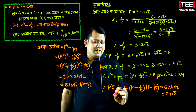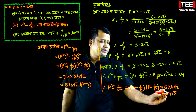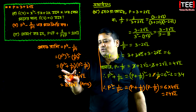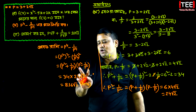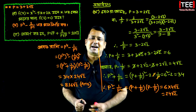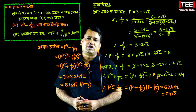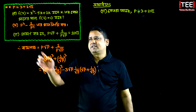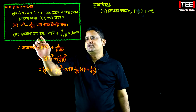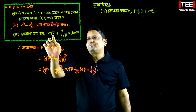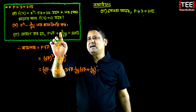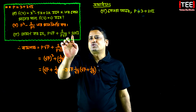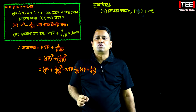We have p squared minus 1 by p squared equals 24 root 2. We want to prove that p root p plus 1 by p root p is equal to 10 root 2.